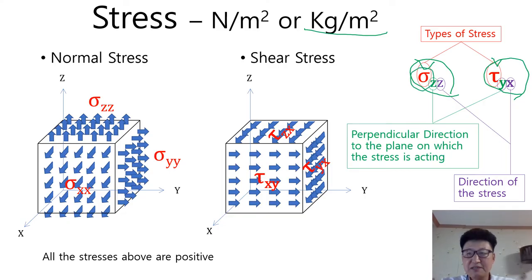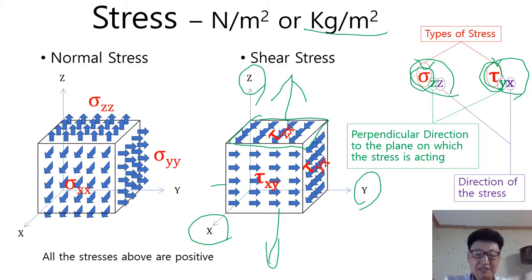which is either sigma for normal stresses or tau for shear stresses. A first subscript indicates perpendicular direction to the plane on which the stress is acting. It has plus sign if that direction is pointing to plus direction of the corresponding coordinate axis. On the other hand, it has minus sign if the direction is pointing to the opposite side. The second subscript denotes the direction of stress as described in the picture.